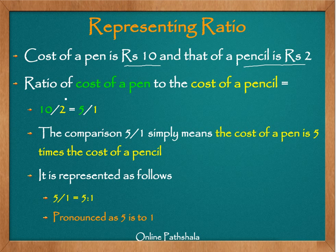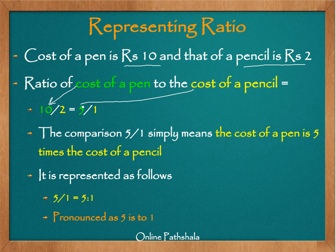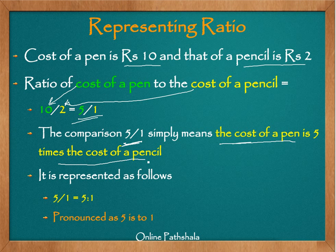We want to find out the ratio of the cost of a pen to the cost of a pencil. This is where the relativity comes in. We simply take 10, which is the cost of a pen, and divide it by the cost of a pencil, which is 2. When we simplify this, we get 5 by 1. This resulting comparison 5 by 1 means that the cost of a pen is 5 times the cost of a pencil.